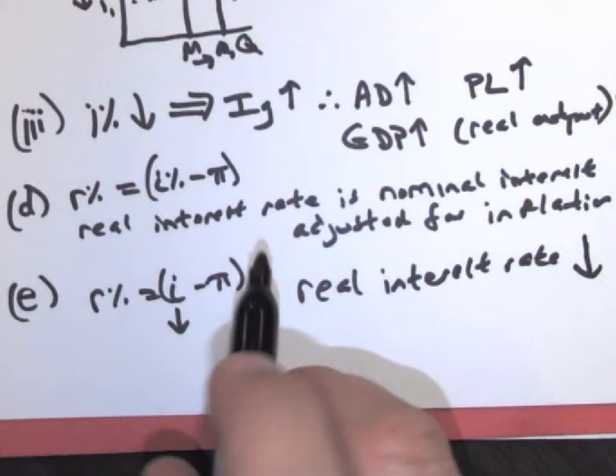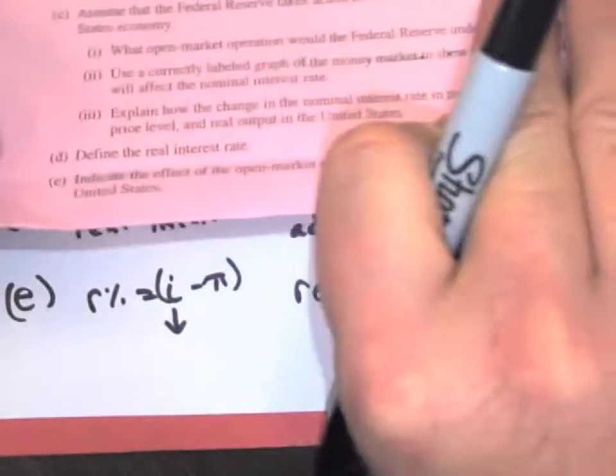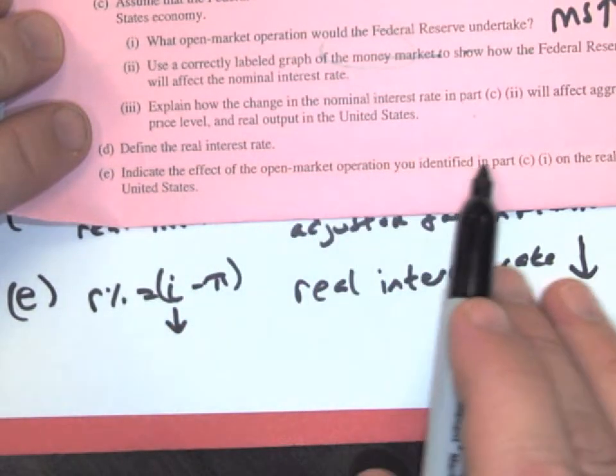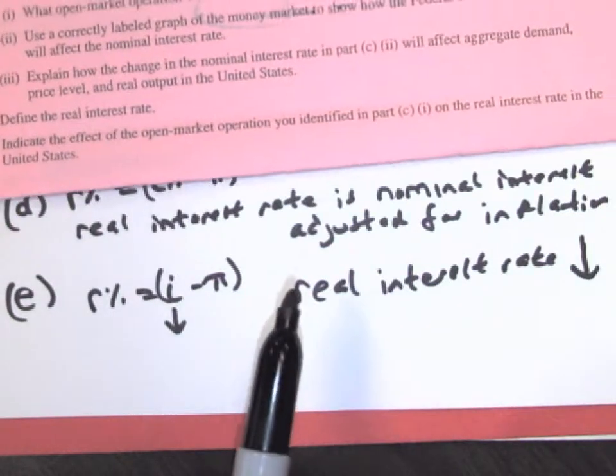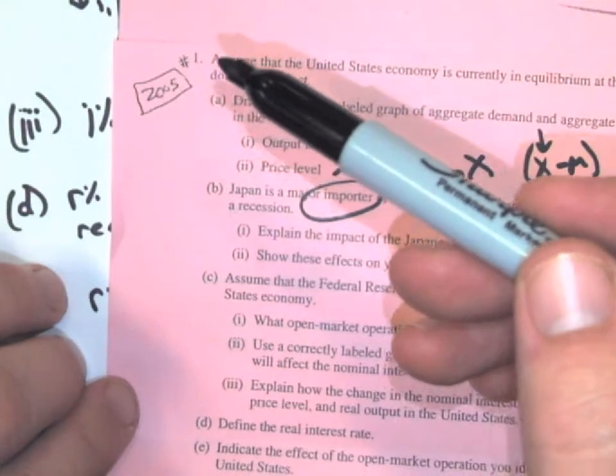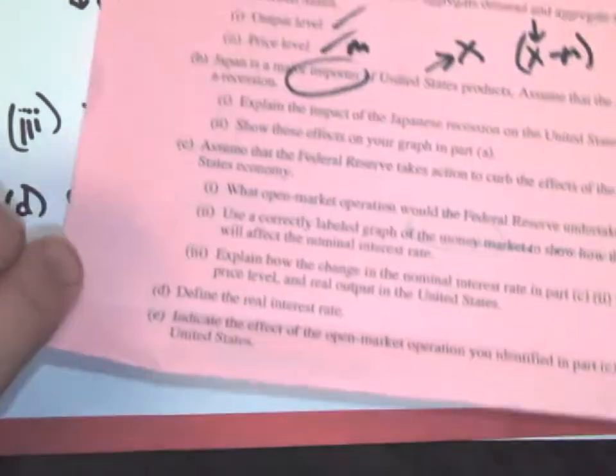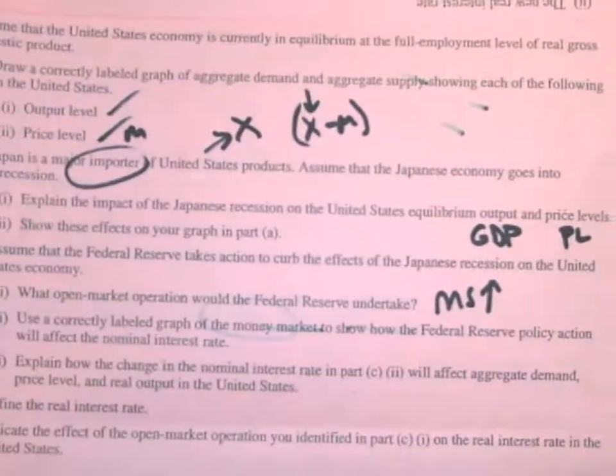Now, does it say explain? No, it just says indicate. So all you have to say is real interest rate is going to drop. In the question, if it says explain, then you have to go a little further. But this one just says indicate the effect of the open market operation you identified in part C on the real interest rate in the United States. So you don't have to explain. Now, that was a lot. This is, anytime you see question number one, this is considered the long question. It has a lot of parts and pieces. And then you'd have a question two or three like these that are a little bit shorter. Okay. So that is all of that one.